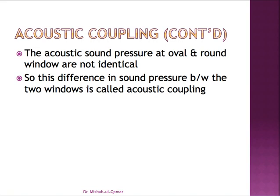Since the cochlear windows are separated by only a few millimeters, the acoustic sound pressure at the oval and the round window is not identical. This difference in sound pressure between the two windows is called acoustic coupling. Both ossicular coupling and acoustic coupling contribute to the loudness of the sound perceived in the inner ear.